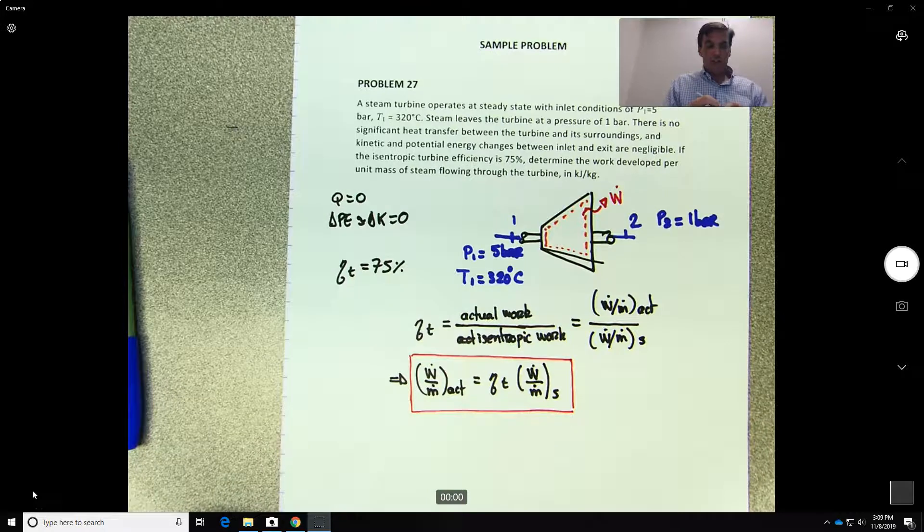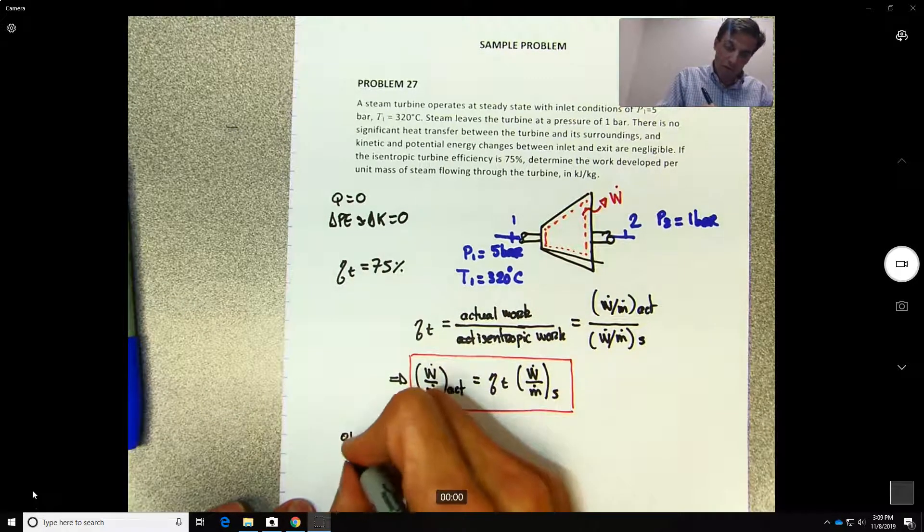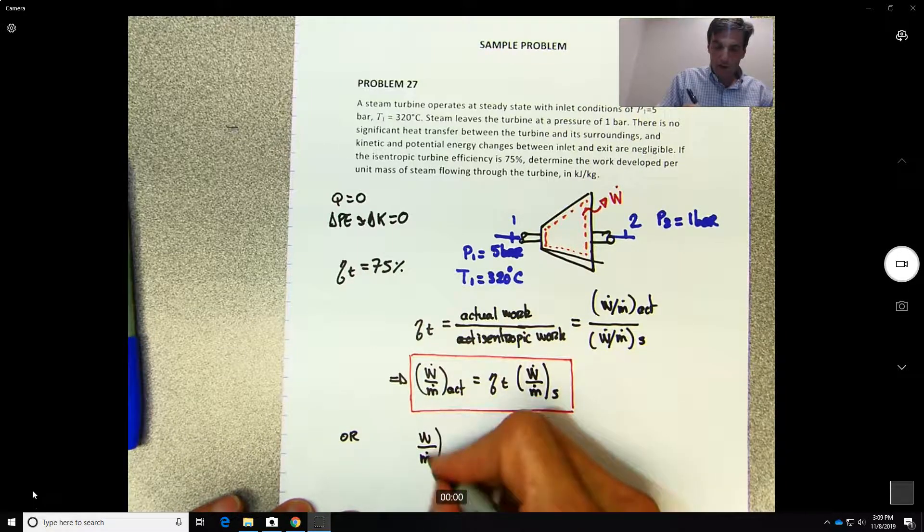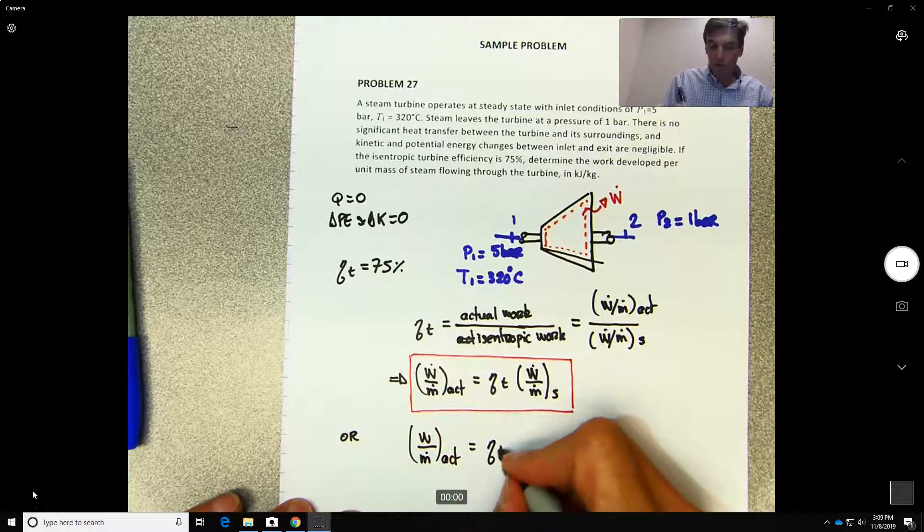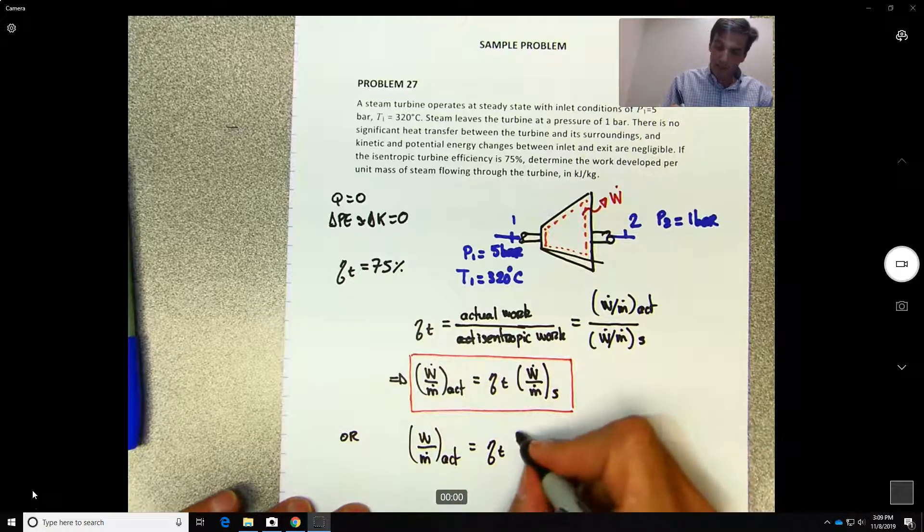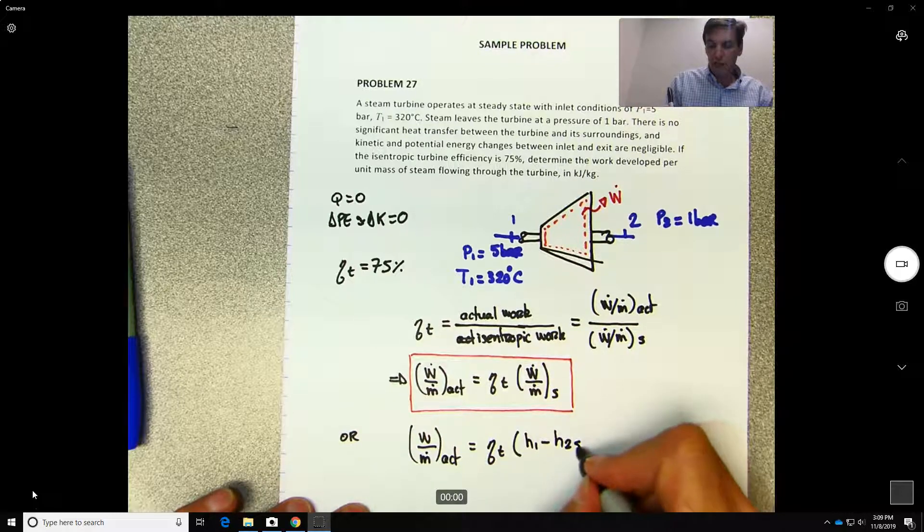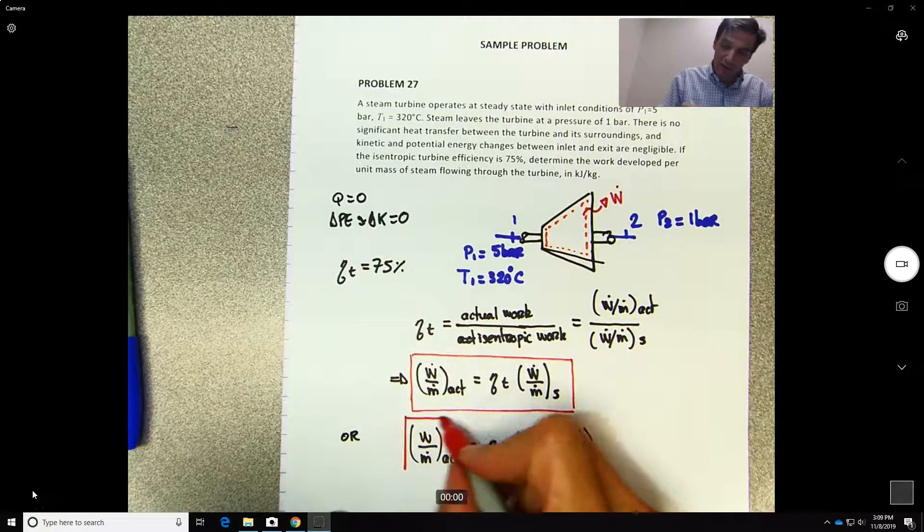This will be equal to the efficiency times what will be the ideal work or the isentropic work. So that's basically the equation. This should be equal to h1 minus h2s. Let me do the figure now to illustrate this.